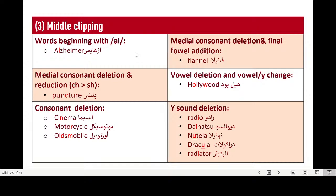Cinema — they delete the N and say sima in Egypt. Motorcycle — they say motorcycle with no R. A word like flannel — the L is deleted and it becomes fanilla. For Hollywood, they say hillyud — they change the vowel and delete the W. For radio, the Y is deleted and they say radu. Daihatsu becomes dihatsu. Nutella becomes nutella. Dracula becomes dracula. Radiator becomes radator.